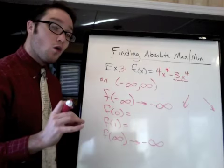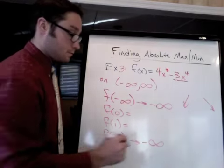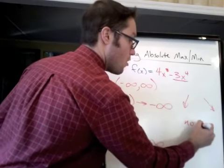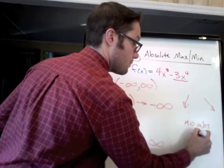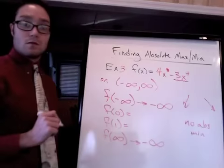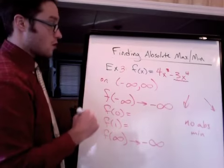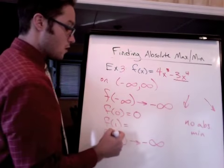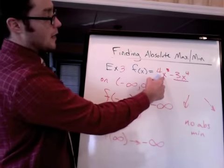That tells me there's no absolute minimum. So I can write that right now. No absolute minimum. Maybe there's an absolute max. Let's plug in 0 and 1. If I plug in 0, I'm getting 0.